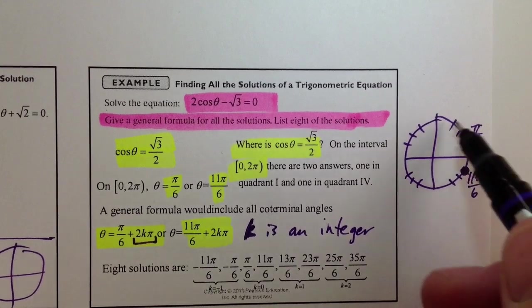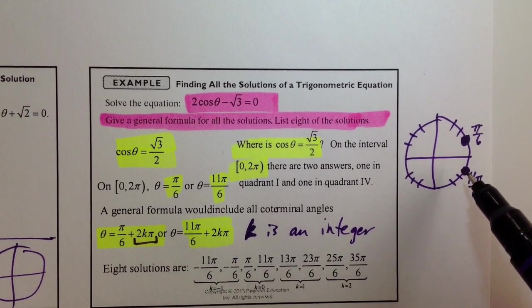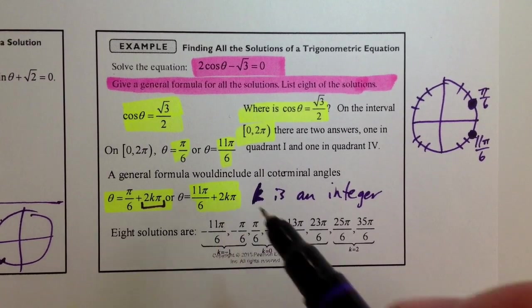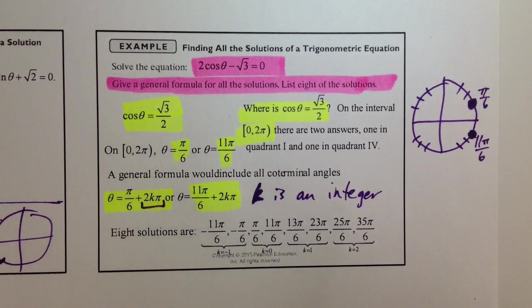Same reasoning why we add the 2k pi. And it's amazing how often, as soon as you see a k, as soon as students see a k, they start thinking, no, this is way too hard.